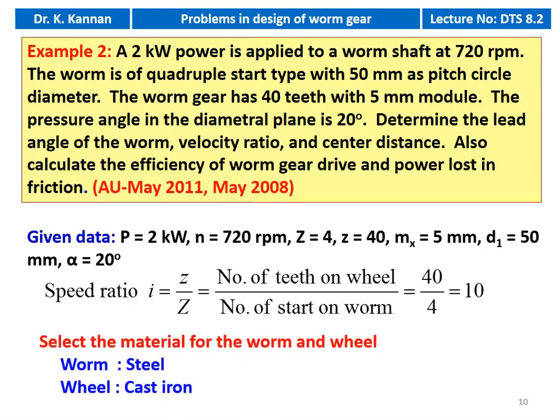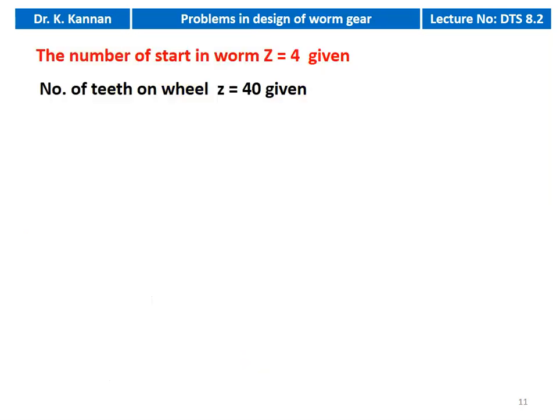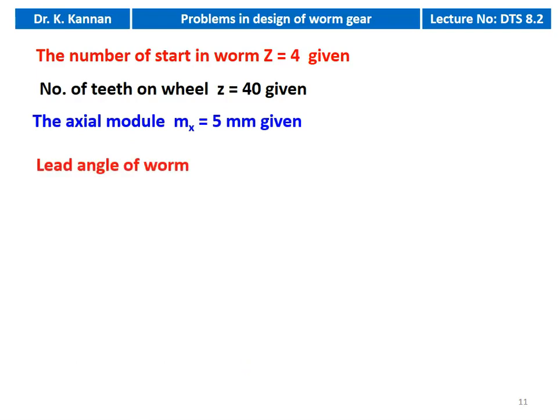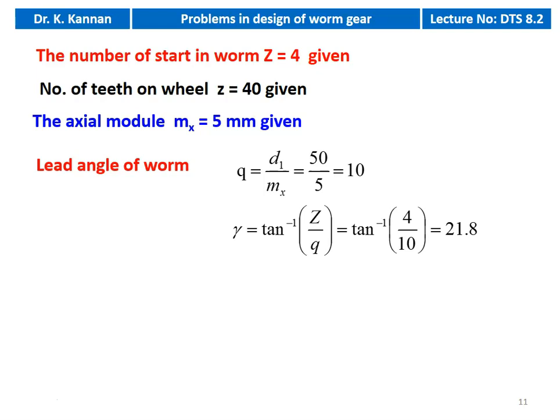Material is not mentioned, so we take steel worm and cast iron wheel. Number of starts Z = 4 and number of teeth on wheel z = 40 are given. The axial module mx = 5 mm is also given. To calculate the lead angle, we first require Q: Q = D1 / mx = 50 / 5 = 10. Lead angle: γ = tan⁻¹(Z/Q) = tan⁻¹(4/10) = 21.8 degree.